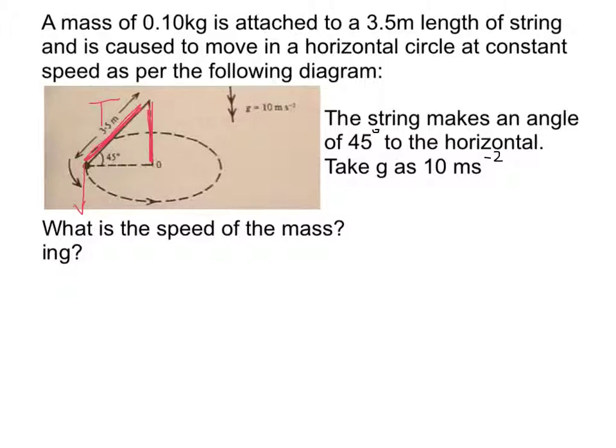In this case here, because it's traveling in a horizontal circle with constant speed, we need to be looking at the centripetal force, which is going to be the horizontal component of the tension in the string. Now with this being a 45 degree triangle, if you have an understanding of your 45 degree triangles, you'll be able to find out that both of those sides are of equal length. So weight will actually be equal to the centripetal force in this instance here.